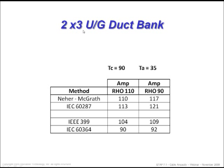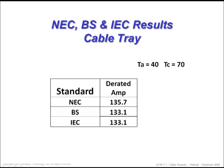This is a two-by-three duct bank. If you go to IEEE 399, the results are more conservative but still very close — IEEE 399 is closer to the thermal analysis, whereas IEC 60364 is a lot more conservative than IEEE 399. With that, I'm going to move to the next item: comparing NEC, BS, and IEC standards for cable trays.